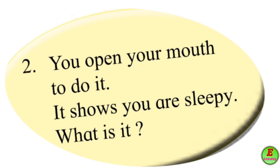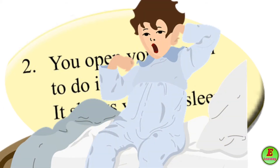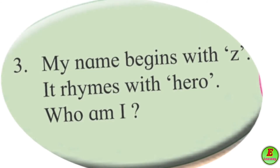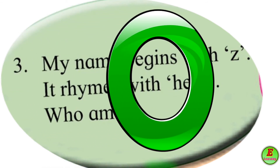Second riddle: You open your mouth to do it — tumhi te ghenya saati ton ughadate. It shows you are sleepy — te dhakavate ki tumhi zhopalat. My name begins with J — majha nawaachi shurwaat J ne hoote. It rhymes with hero — techi rhyming ahe hero. Who am I? Answer is Zero — J-E-R-O, Zero.